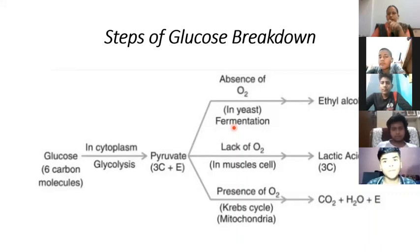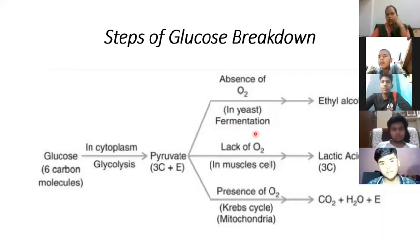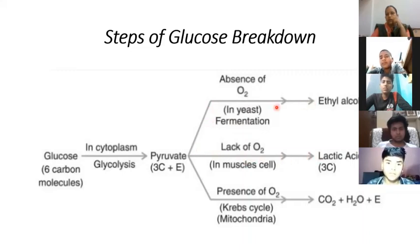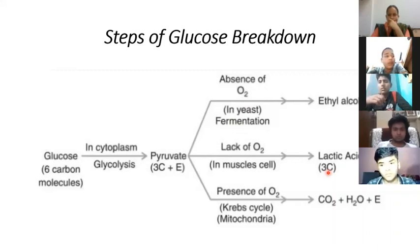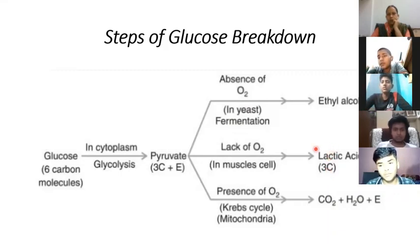For example: what will happen if yeast is placed in a sugar solution? The yeast will start to ferment. Both lactic acid fermentation and ethanol fermentation are anaerobic — occurring in the absence of oxygen. In muscles, the end product is lactic acid; in yeast, the end product is ethyl alcohol. Both release only 2 ATP energy.